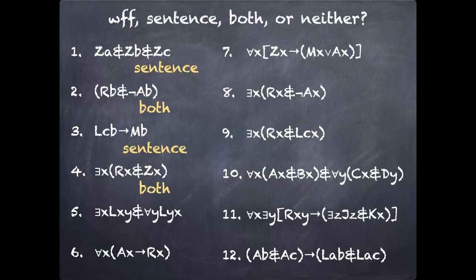Number five, you will see the quantifiers are such that they are only applying to the atomic formula right next to them. That means that this Y and this X are free variables. So that means it's neither. It's not a sentence, can't be a sentence. It's also not a wff because the parentheses around the conjunction are gone. So it's neither. It is just an expression.